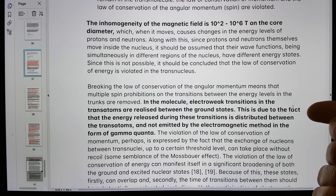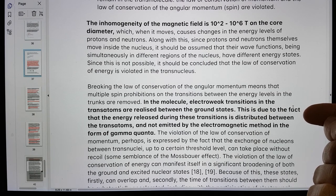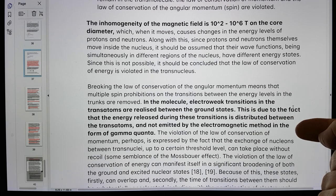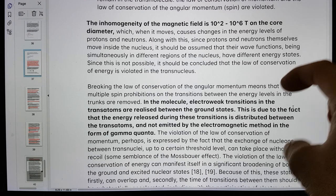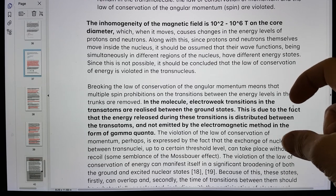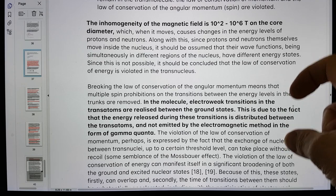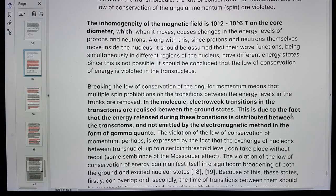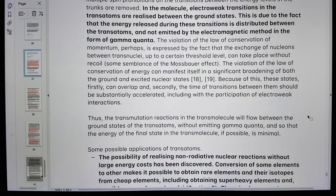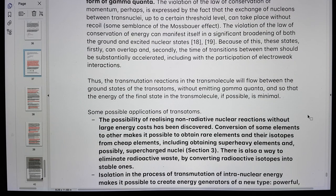In the molecule, electroweak transitions in the transatoms are realized between the ground states. This is due to the fact that energy released during the transitions is distributed between the transatoms and not emitted by the electromagnetic method in the form of gamma quanta. So this is his explanation for why you're not seeing gammas coming out of these low-energy nuclear reactions.